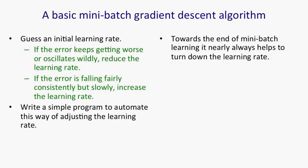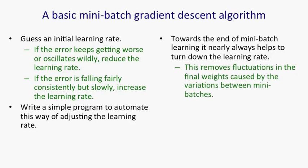One thing that nearly always helps is towards the end of learning with mini-batches, it helps to turn down the learning rate. That's because you're going to get fluctuations in the weights caused by the fluctuations in the gradients that come from the mini-batches.